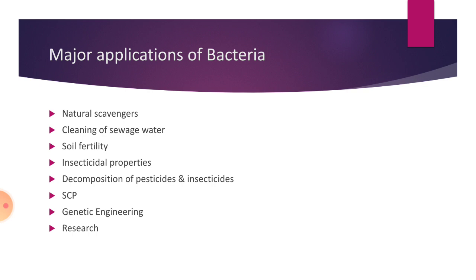There is another Bacillus species — Bacillus sphaericus — which can kill larvae of mosquitoes, so that it can control dengue, malaria, and other mosquito-related diseases. Thus, these bio-insecticides are very, very useful to mankind and to nature. That is why agriculture has gained renewed interest in biological types of insecticides.